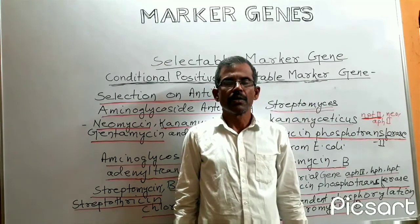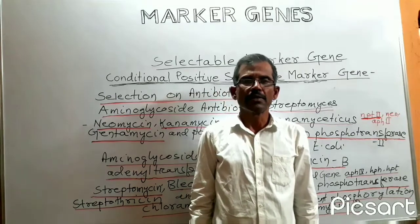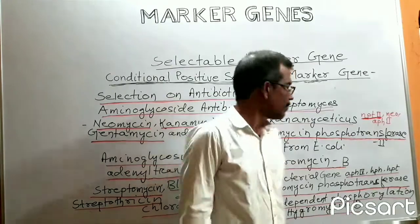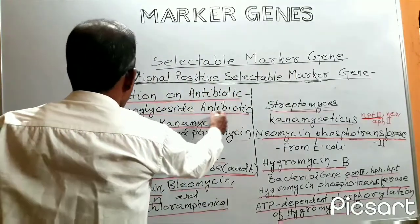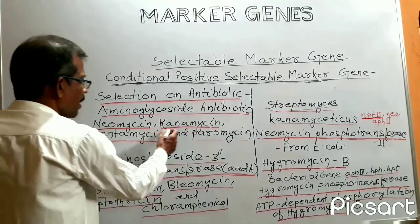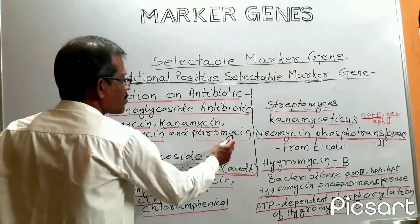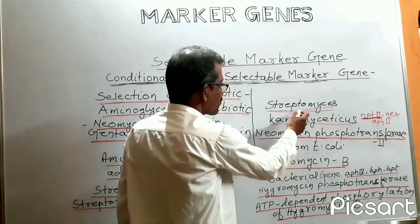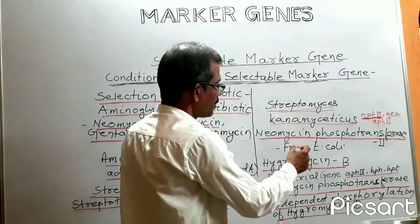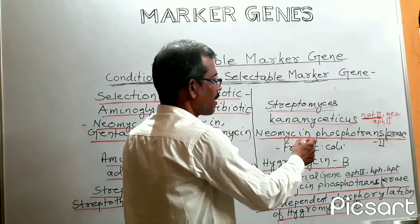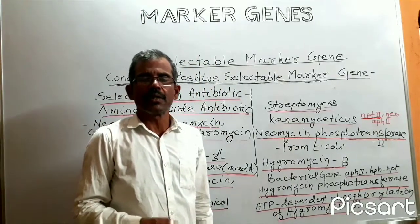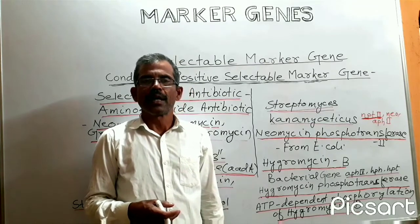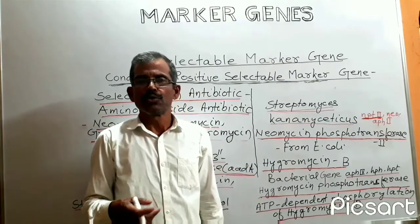We are discussing conditional positive selectable marker genes. Now we shall see how transgenic plants are selected using an antibiotic as the selective agent. The aminoglycoside antibiotics include neomycin, kanamycin, gentamicin, and paramycin. There is a microorganism known as Streptomyces kanamyceticus, a soil actinomycete that produces the antibiotic kanamycin. Kanamycin is highly toxic to plant cells because it inhibits the process of protein synthesis. Microbes also synthesize various enzymes that confer resistance to kanamycin through various reactions.